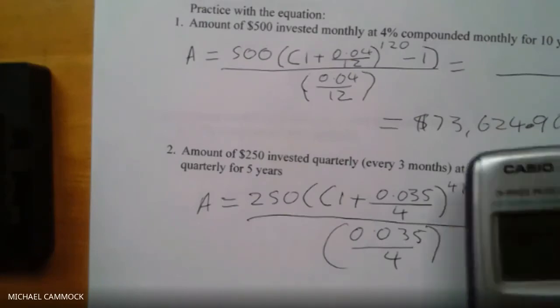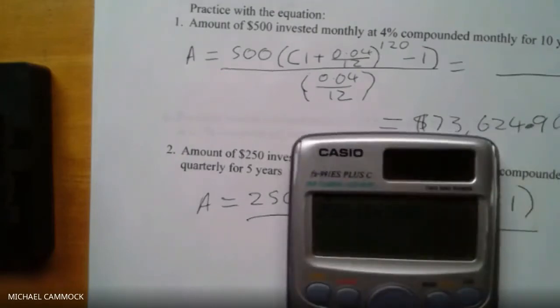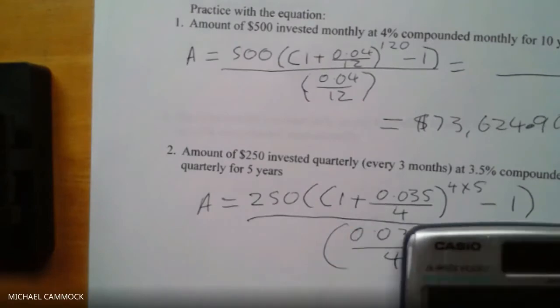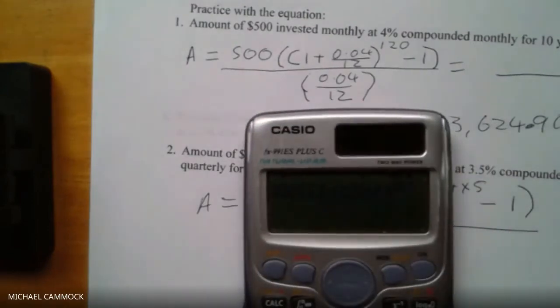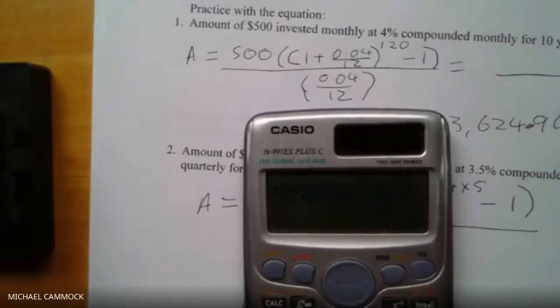On the calculator: 250, two brackets, one plus 0.035 divided by 4, close bracket, raised to the power of 20 — because it's five years quarterly, so 4 times 5 — move over one, minus one, close bracket, equals. I'm getting 47.58. Does everybody have the same?